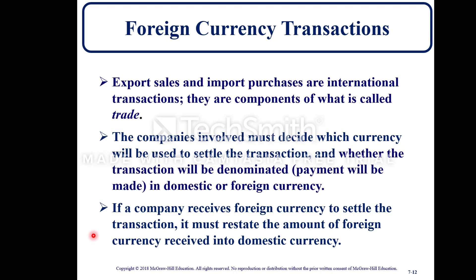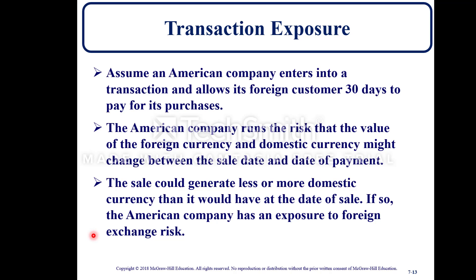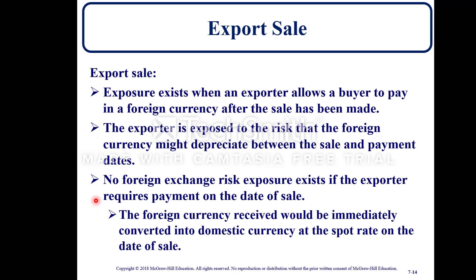Transaction exposure arises when an American company allows a foreign customer 30 days to pay. The company runs the risk that the value of the foreign currency in domestic currency terms might change between the sale date and the payment date, generating more or less domestic currency. For export sales, exposure exists when the exporter allows payment in foreign currency after the sale — the exporter risks that the foreign currency might depreciate between sale and payment dates. No foreign exchange risk exists if the exporter requires payment on the date of sale, as the foreign currency would be immediately converted at the spot rate.